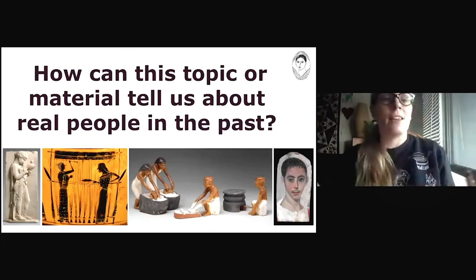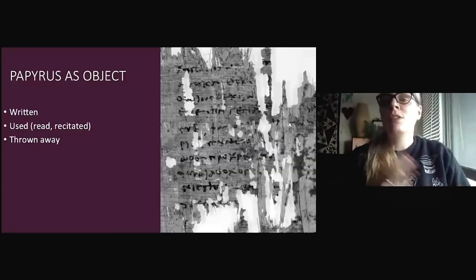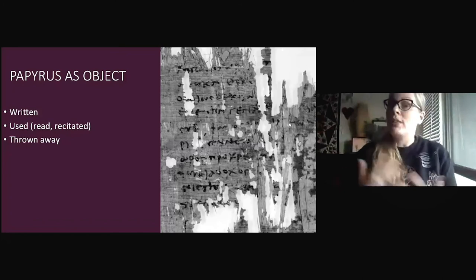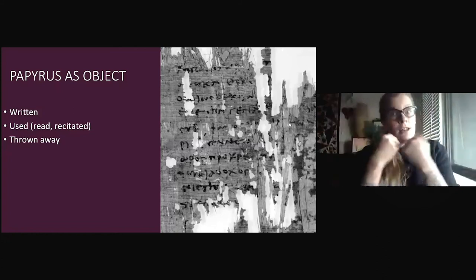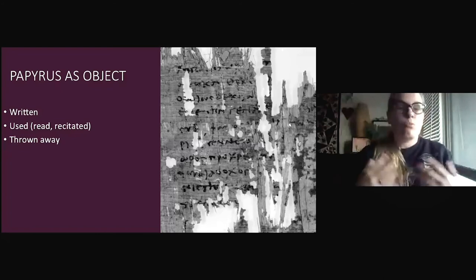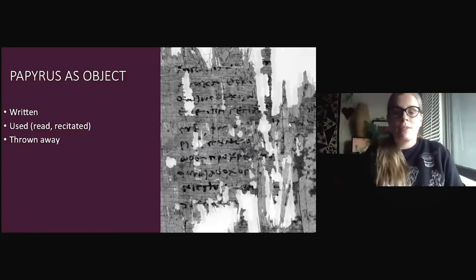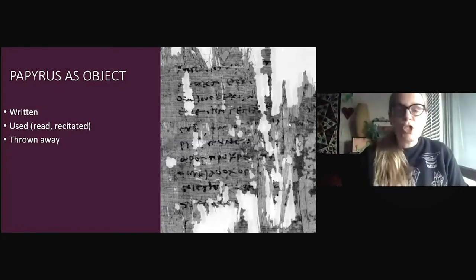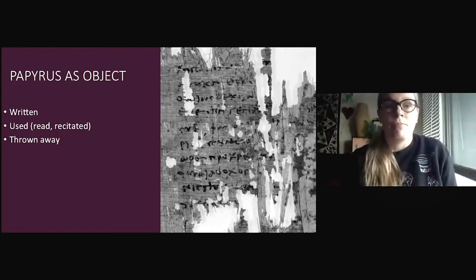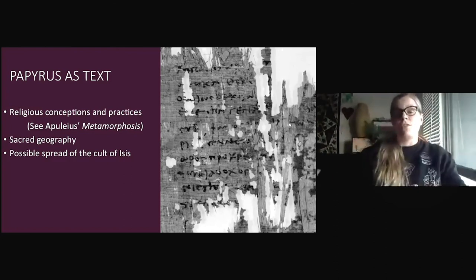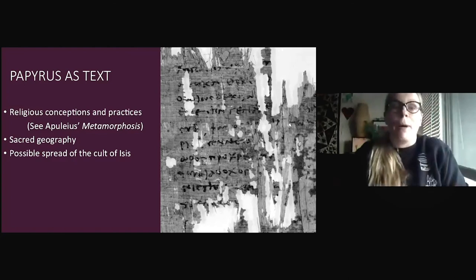So how can this document tell us about real people in the past? It does so in more than one way. First, we need to look at this document as an object. This text was written by someone; it was used, read out loud, listened to by many people. And eventually it was thrown away in the rubbish, either because it was too worn out, broken, or simply because whoever had custody of it thought it was no longer of use. So this is an actual object that had a life of its own in a religious context, and that tells us about how the goddess was worshipped, and how, as an object, its life came to an end as well. As a text, it also gives us an idea of the vast expanse of territory throughout which Isis was worshipped, backed up by archaeological evidence.